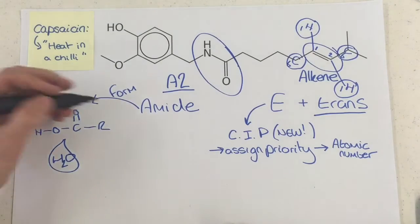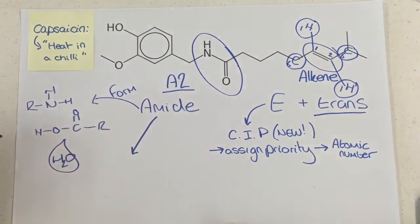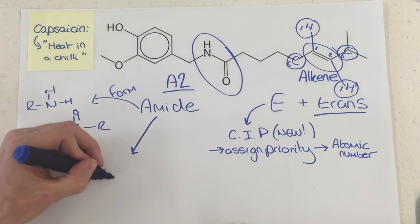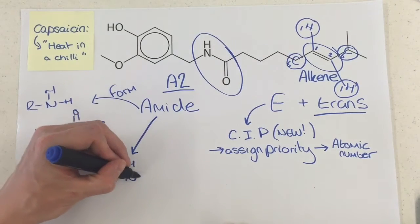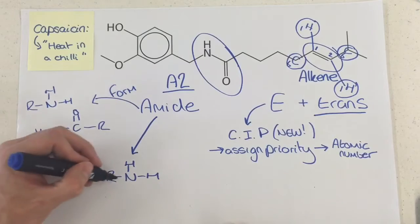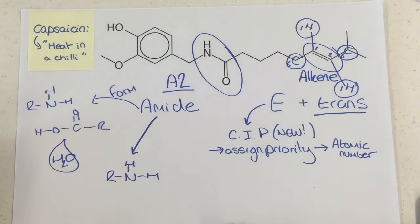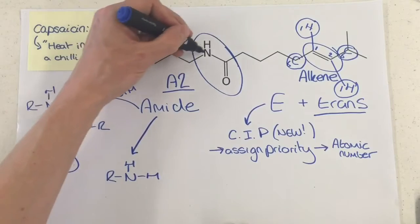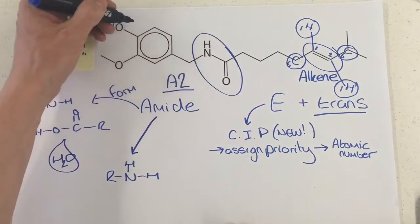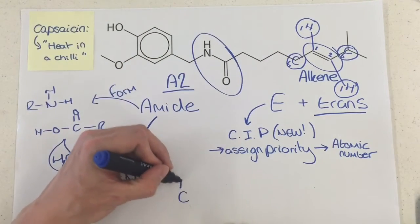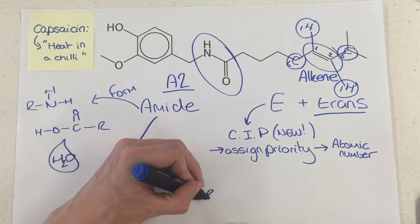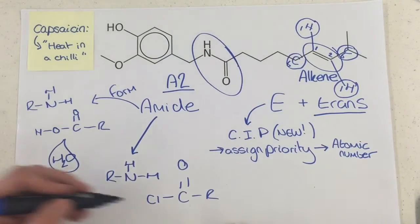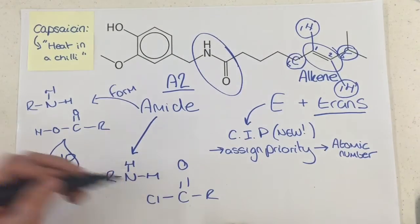What we also know — new to the specification — is we can form an amide from an amine, as long as you've got this R group here, so it can't be ammonia, otherwise we wouldn't explain all of this bit here that goes with it. And an acyl chloride, which looks just like a carboxylic acid except instead of an OH, you have a chlorine.